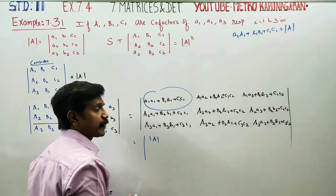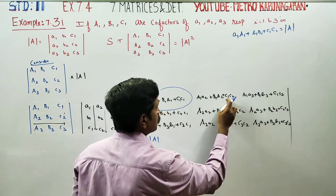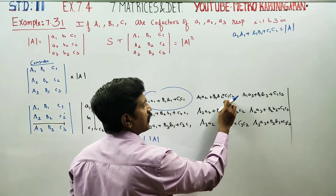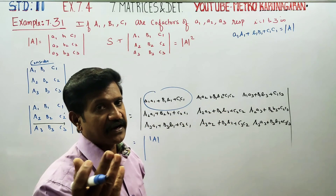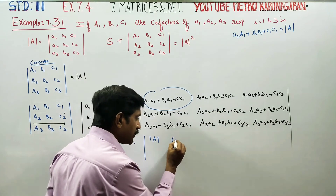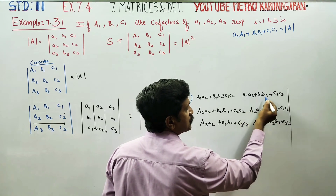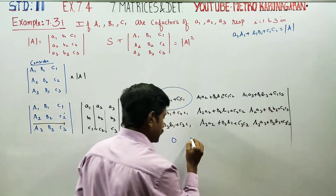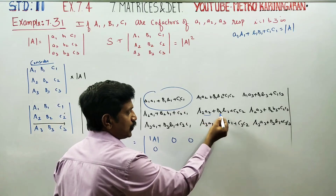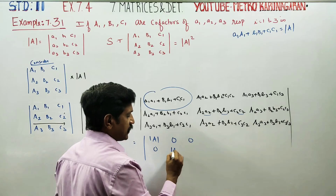This is determinant A. When an element is multiplied by its own corresponding cofactor, you get the determinant A. But when an element is multiplied by the cofactor of a different row — for example a1 with A3, a2 with A3 — the product is 0. Corresponding element times cofactor gives determinant A; non-corresponding element times cofactor gives 0.